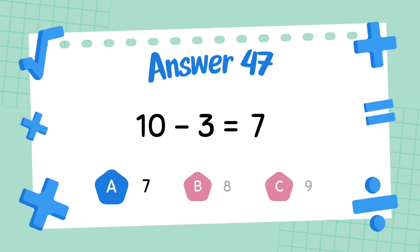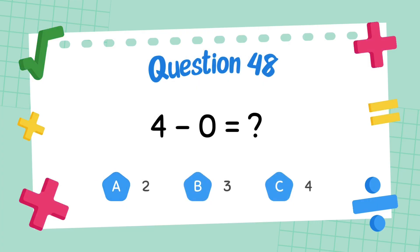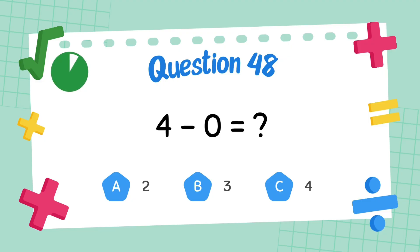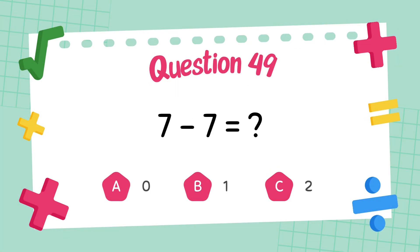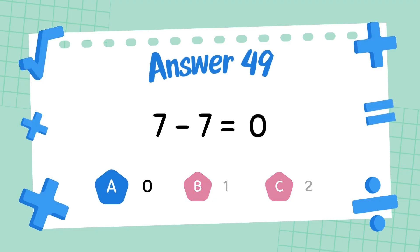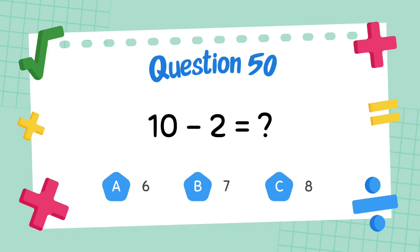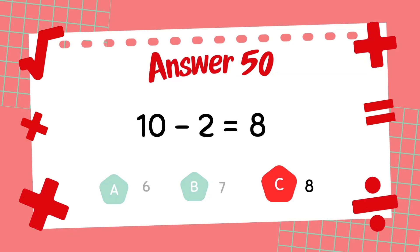What is 10 minus 3? The answer is 7. What is 7 minus 7? The answer is 0. What is 10 minus 2? The answer is 8.